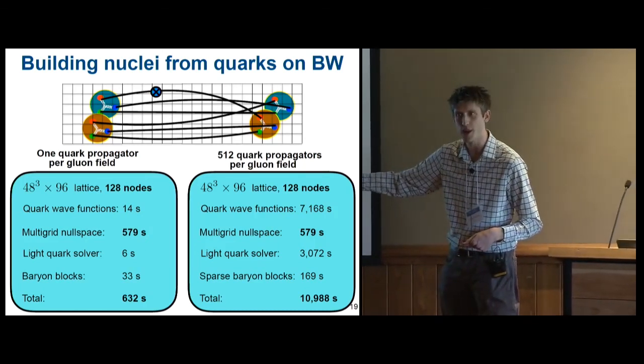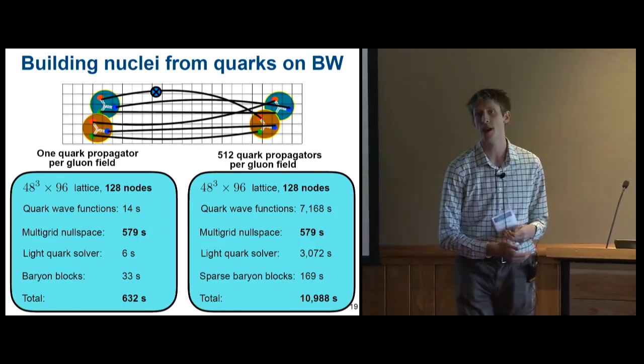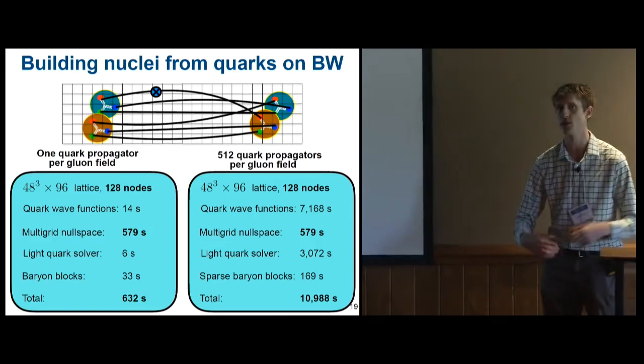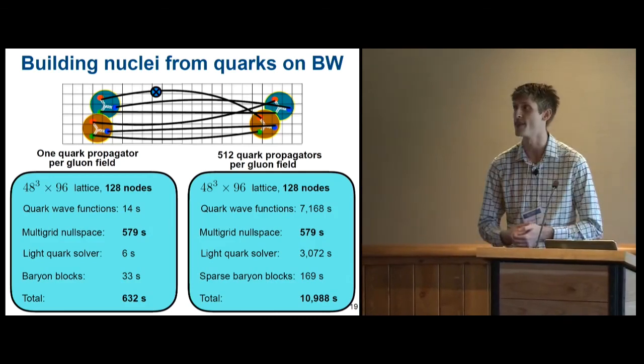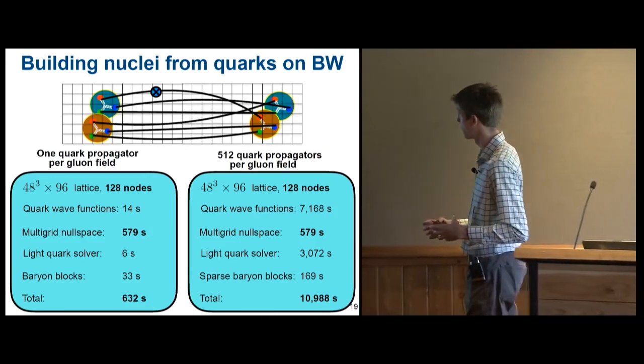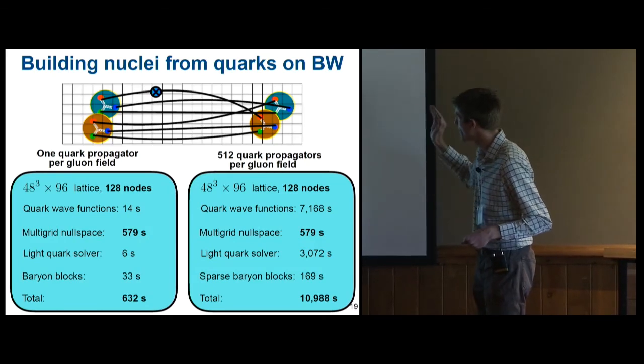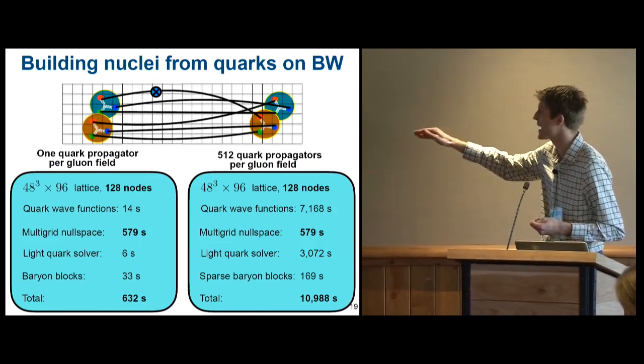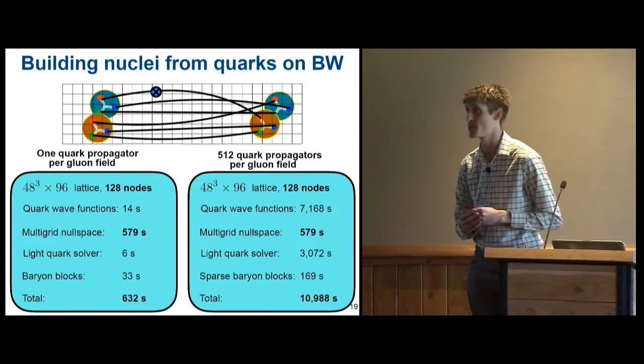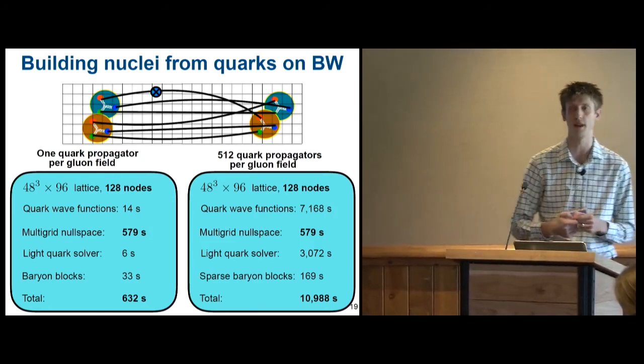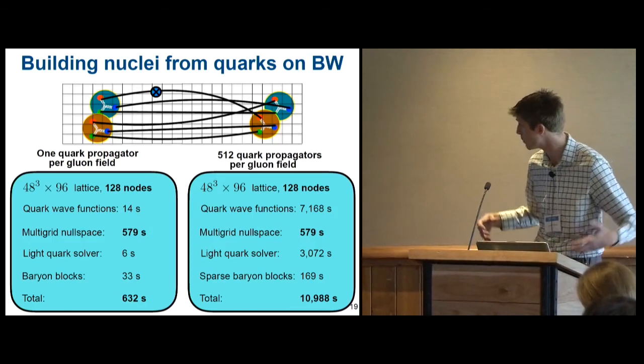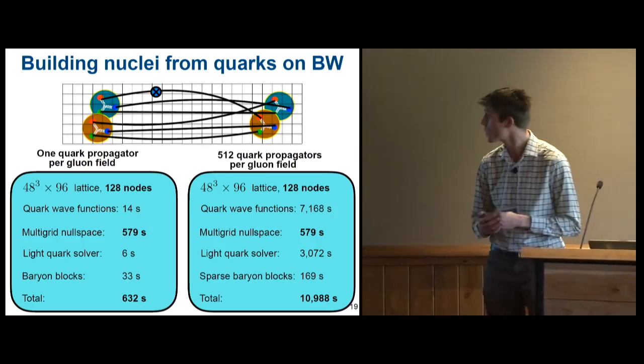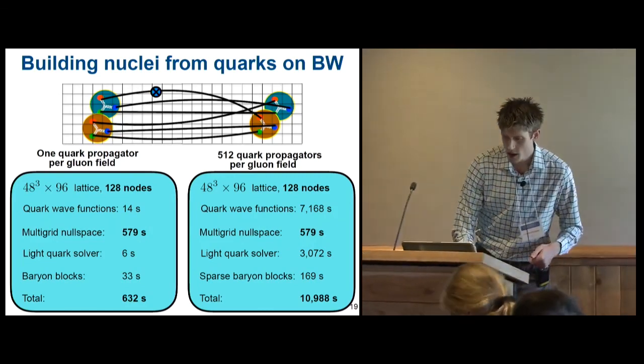This thing called baryon blocks here would actually become the largest piece of the cost. And so that's something that we've been worrying about for the last couple months at MIT, and have a new trick where we basically compress the way our baryon blocks are stored. And that gives us a factor of 100 times speed up on that piece of the calculation. And so now it's actually creating the quark wave functions. That's the largest piece. And this is simply because it's now the piece that has been optimized the least. So that's something we're thinking about going forward. Now that the real challenging parts that we were most worried about seem to be under control and moving along smoothly on Blue Waters, we're going back and thinking more about how we can get this down even further.